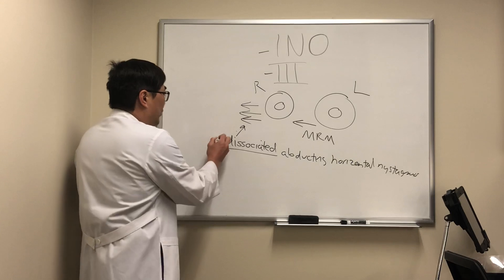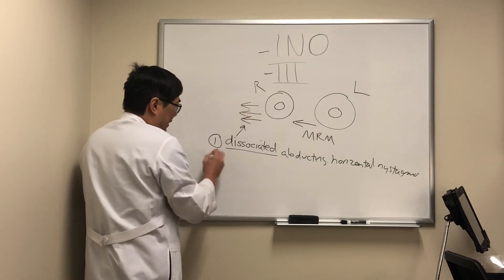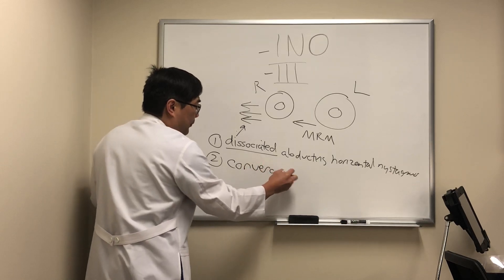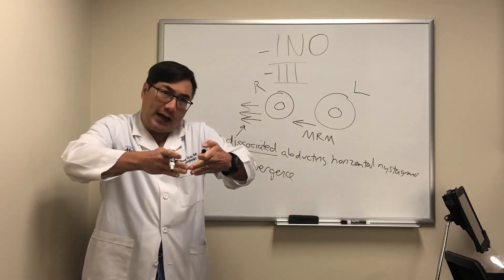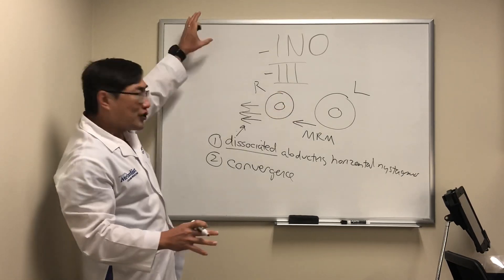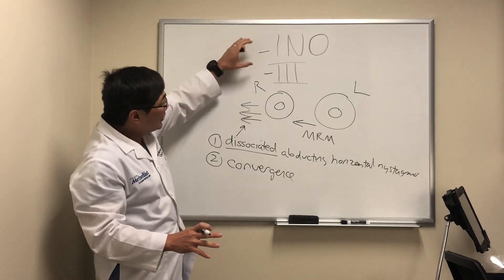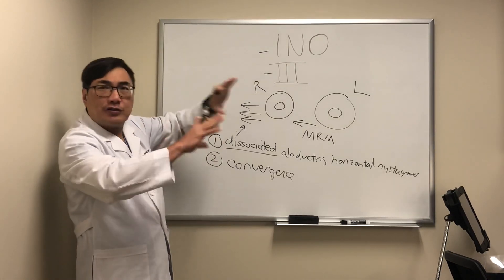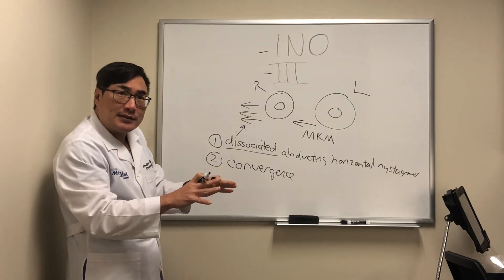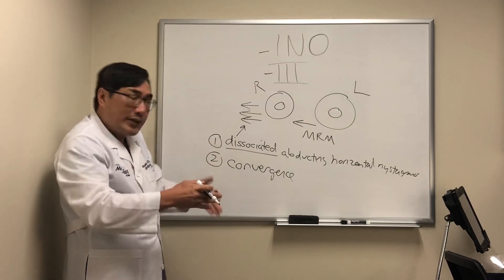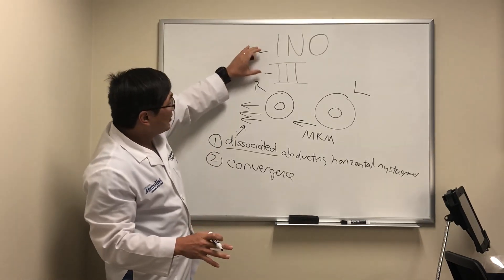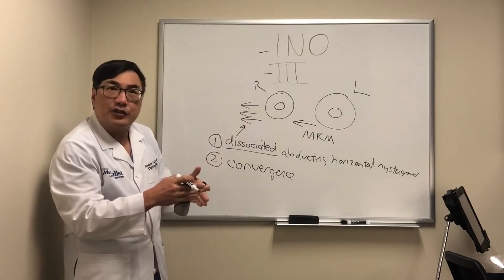The second thing we're going to be looking for in the INO is if we can overcome the INO with convergence. If we can converge the eyes, that means we can activate the medial rectus muscle from the rostral midbrain-pontine junction without invoking the actual third nerve itself. I can just talk to the medial rectus with convergence without having to invoke the third nerve. So the rest of the third nerve is not involved in the convergence effort.